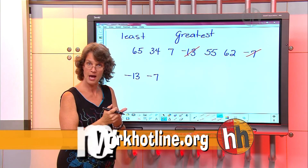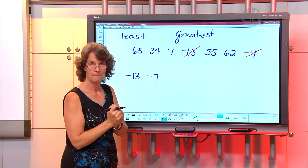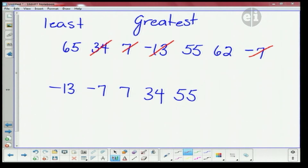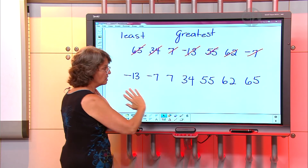Now let's look at the positives — that's money you have in your pocket. What's the least you would like in your pocket? Seven. Good. And what would be the next one? 34. The next one? 55. Then 62. And the final one is 65. So now you have put them in order from smallest on the left to biggest on the right, and that's the same way your number line is.